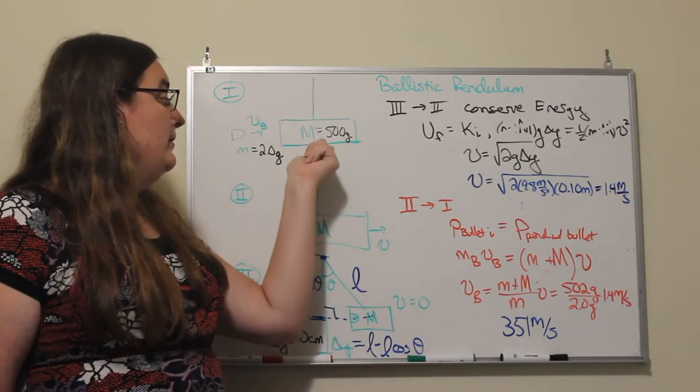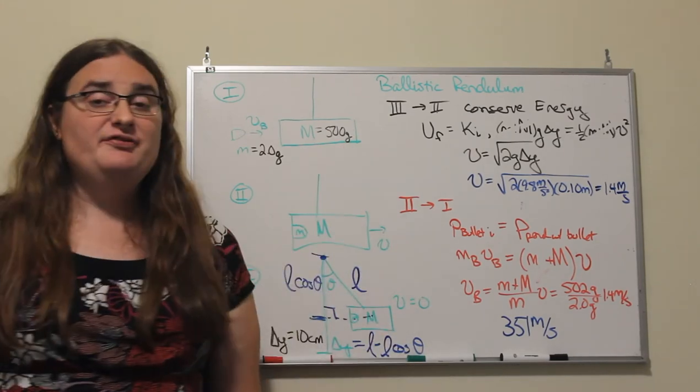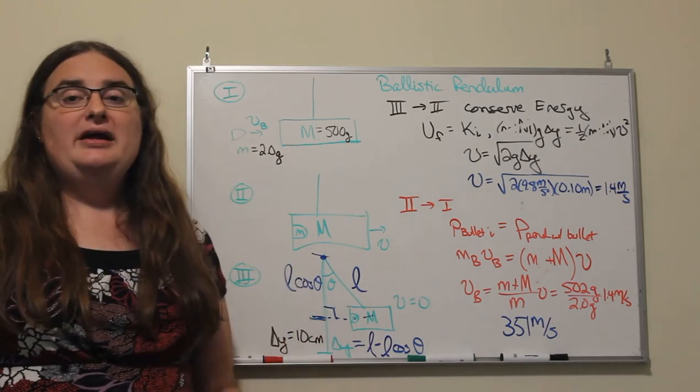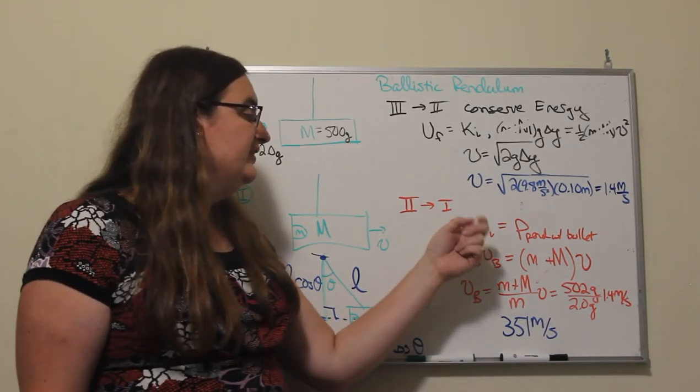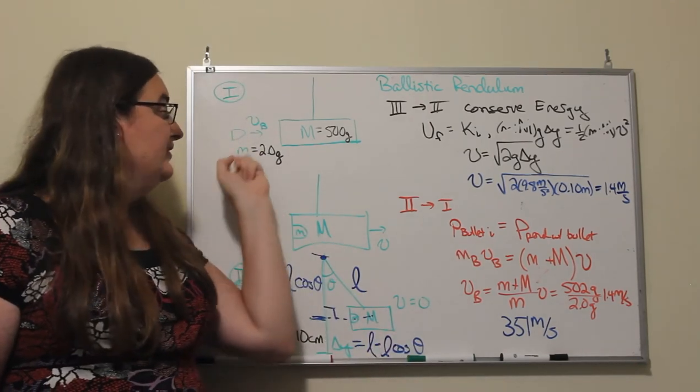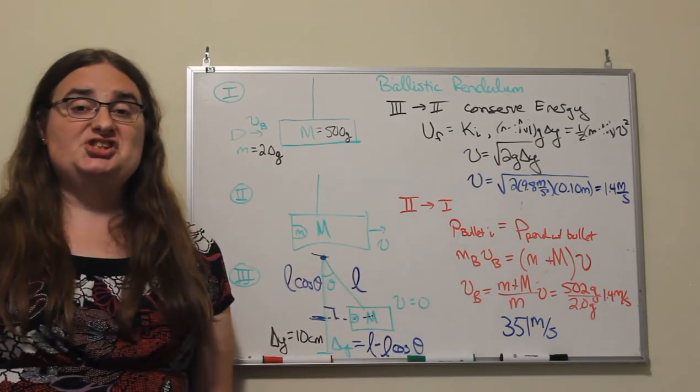So if this larger mass starts at rest and has a mass of 500 grams, and the projectile is moving and it has a mass of 2 grams, then the initial momentum is just the momentum of the projectile, and the momentum of the projectile is going to be its mass times its speed.